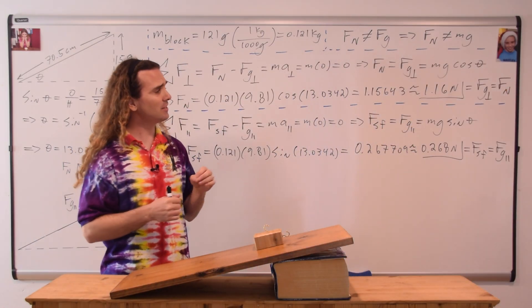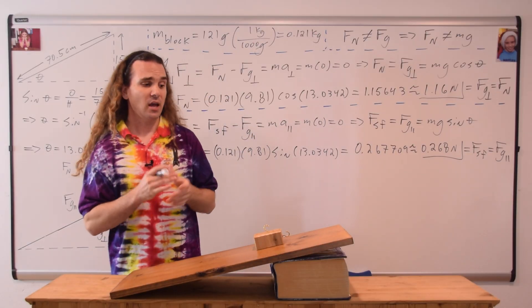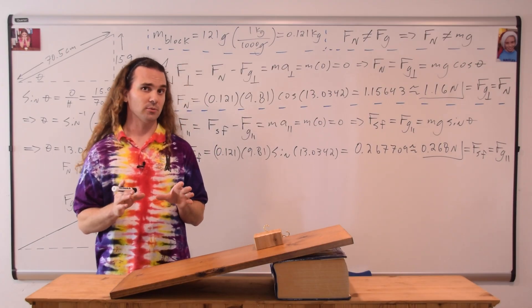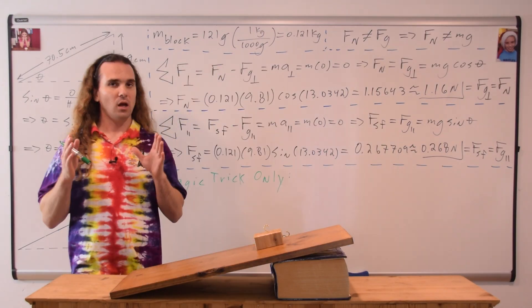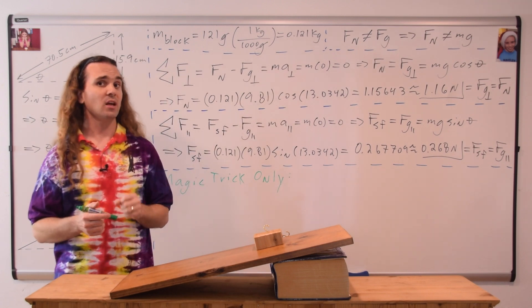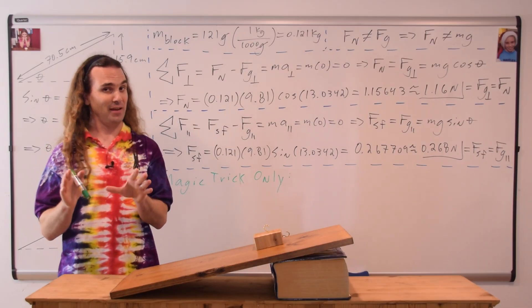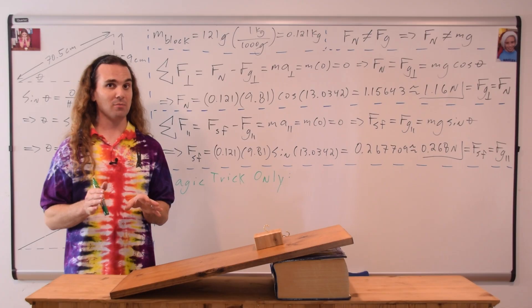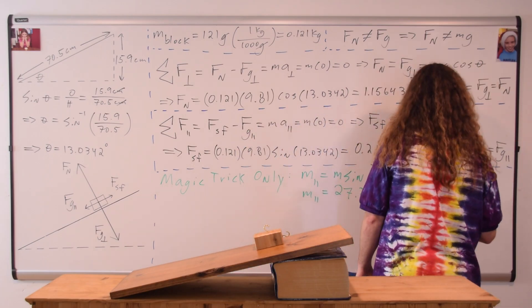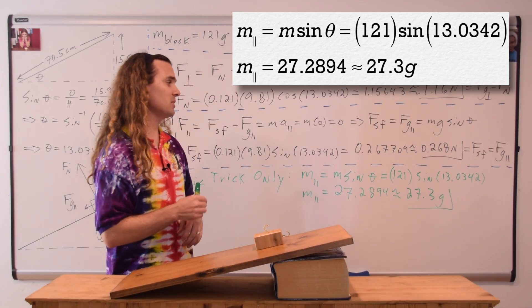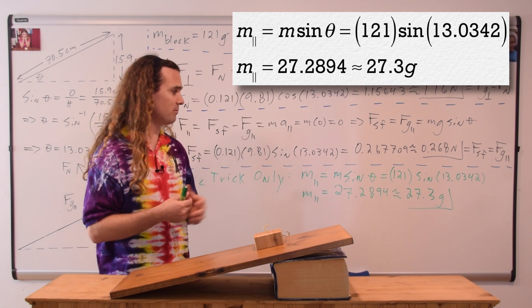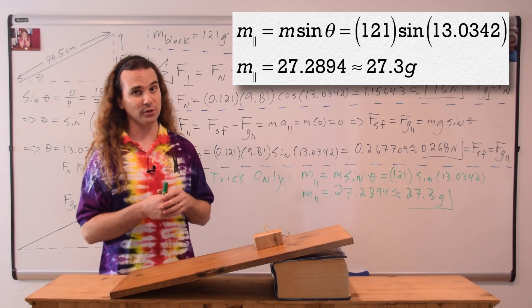At this point we have determined the magnitudes for all the forces currently acting on the block, and everything done so far is typical of the way we solve physics problems. What I am about to do is to solve for numbers for the magic trick. This portion is for the magic trick only — you would only do this part if you were going to do this magic trick for your friends and family at home, not when solving a physics problem. I'll take notes then. The mass in the parallel direction equals mass times the sine of the incline angle, or 121 grams times the sine of 13.0342, which is 27.2894, or with three sig figs, 27.3 grams.